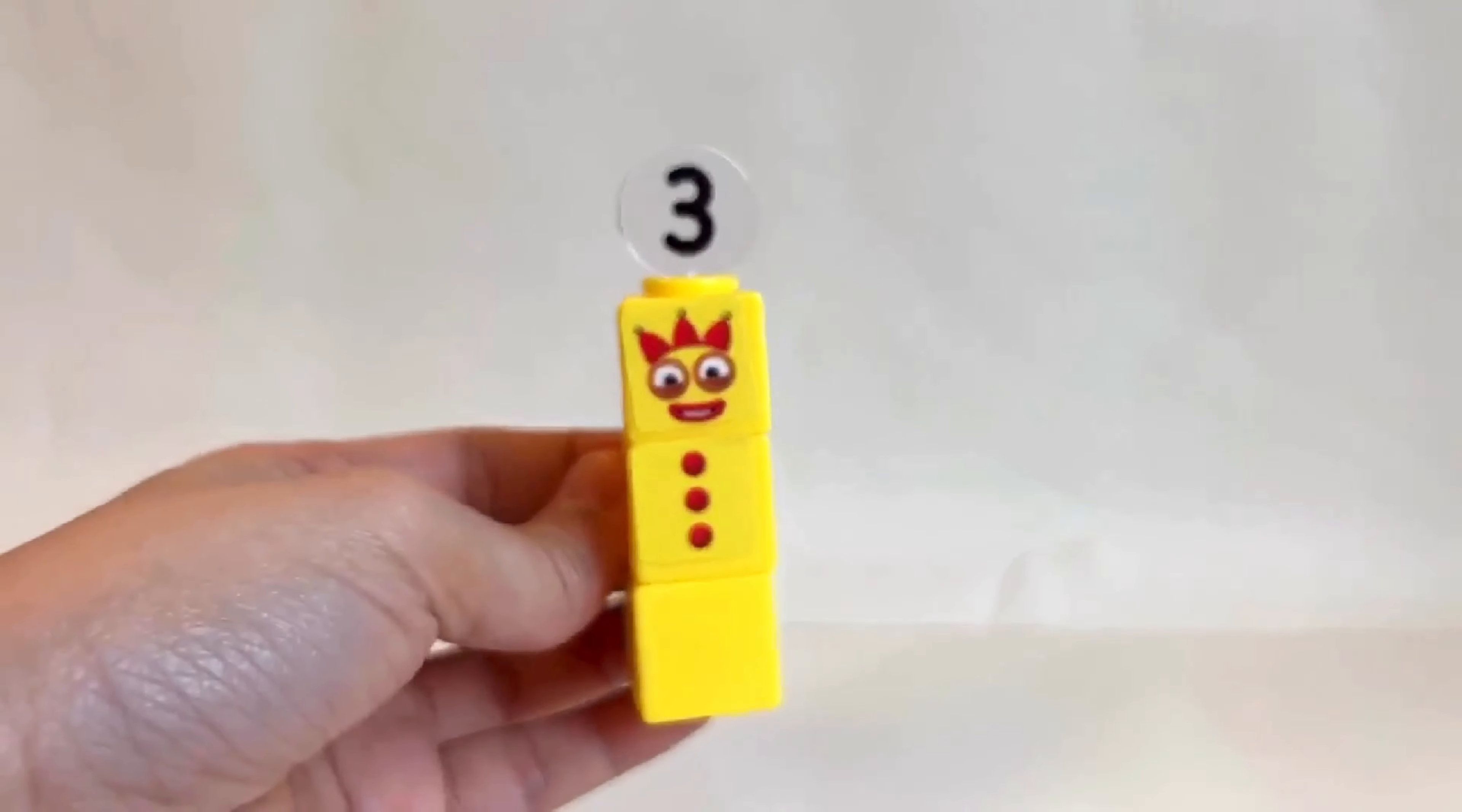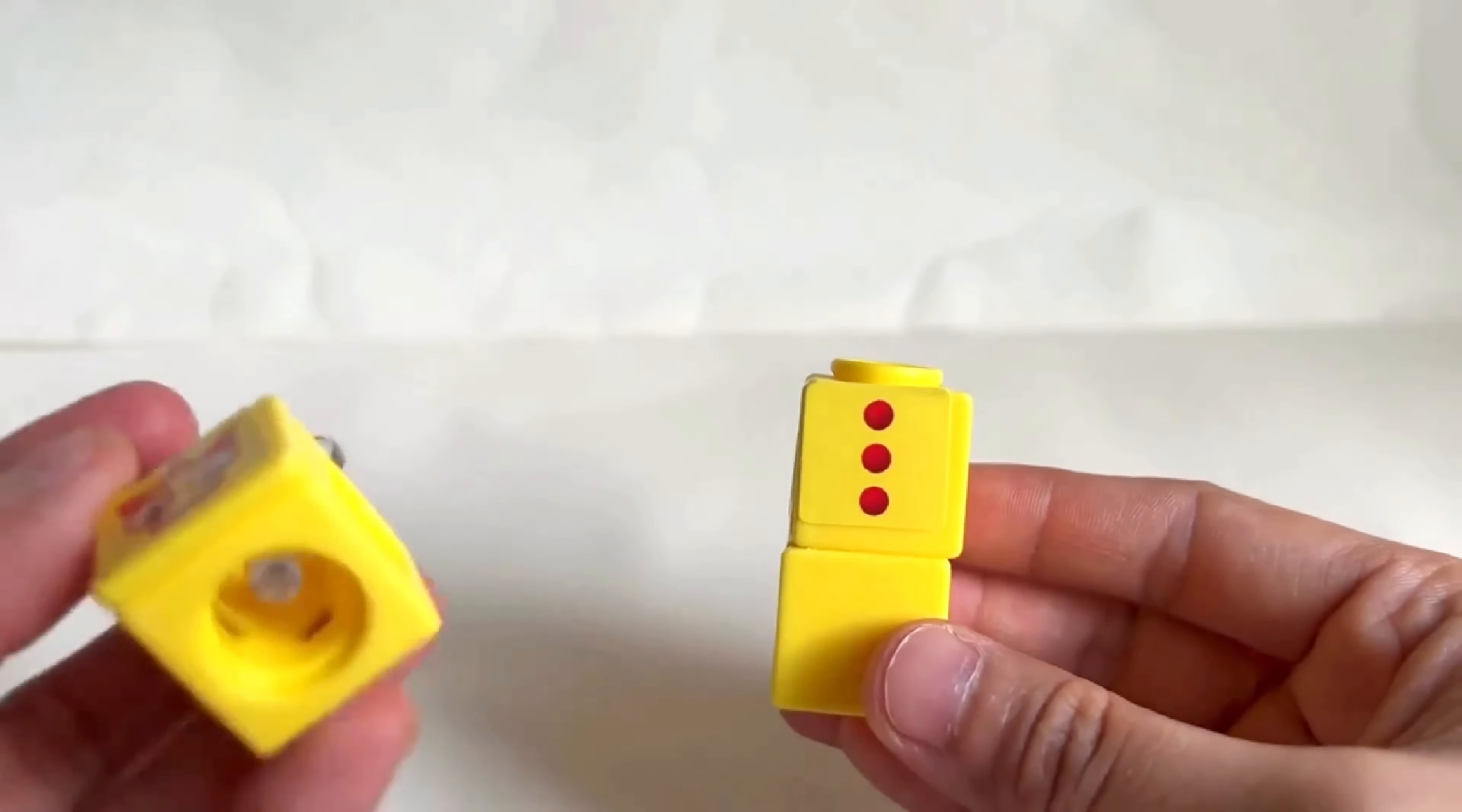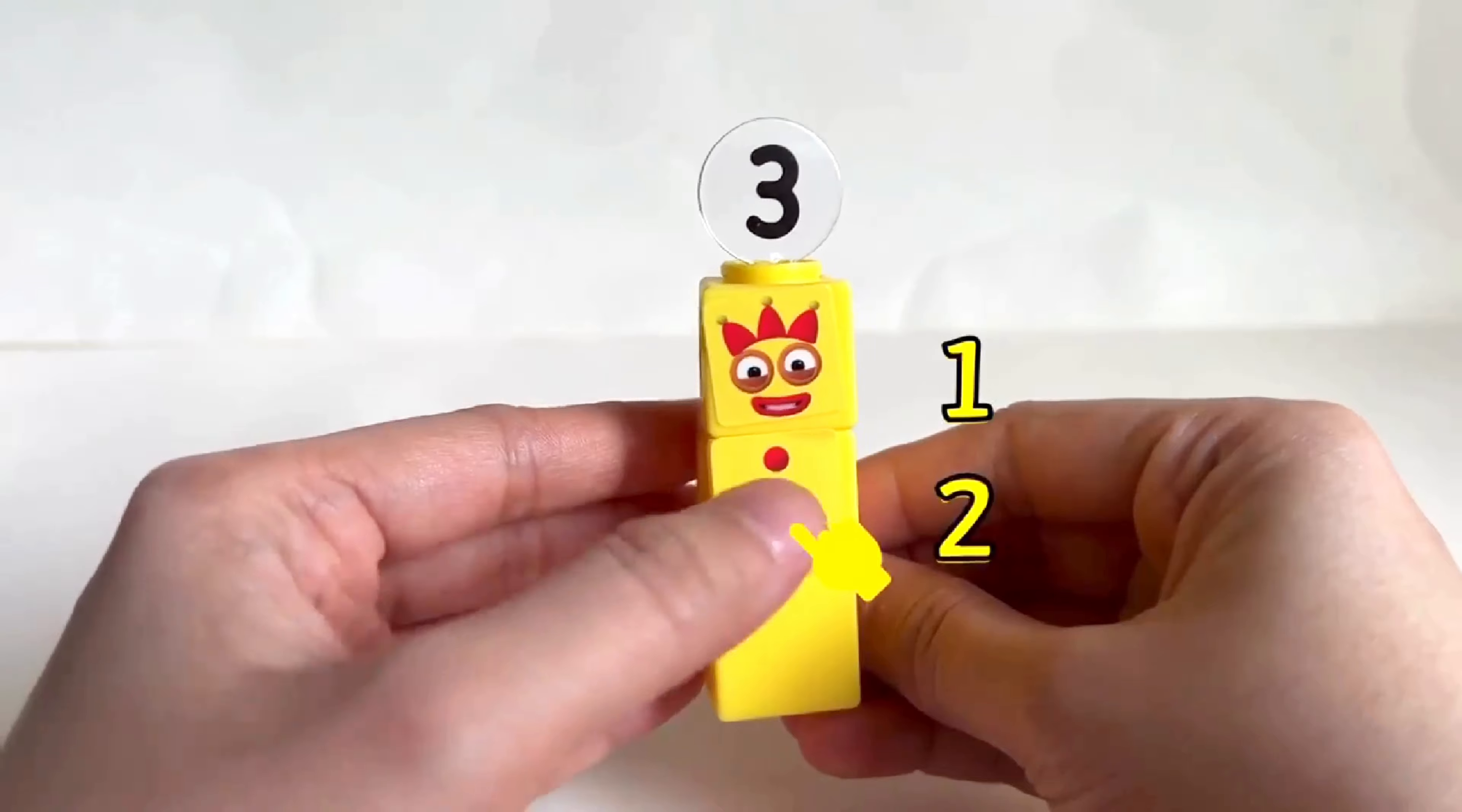Perfect! On to number block 3. It's the number 3. Can I see 3? Well done! Let's count with number block 3. One, two, three. You are doing great!